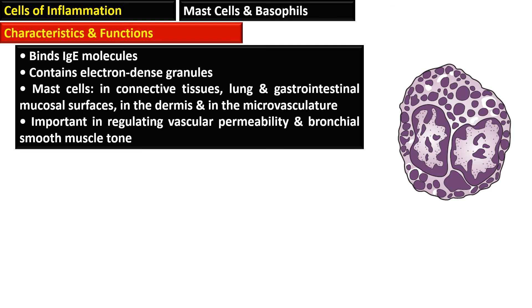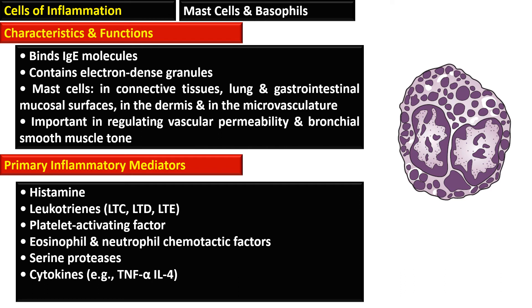Mast cells are important in regulating vascular permeability and bronchial smooth muscle tone. The primary inflammatory mediators present in mast cells are histamine, leukotriene C4D4, platelet-activating factor, eosinophil and neutrophil chemotactic factors, serine proteases, and cytokines such as TNF-alpha and interleukin-4.